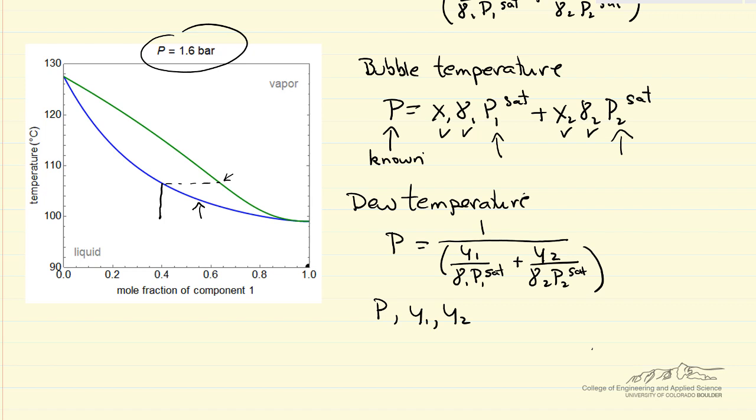We don't know the saturation pressures because we don't know the temperature. Now we're going to have to solve equations simultaneously: Antoine's equations for the two pressures, this equation, and then the equation that relates gammas to mole fractions. So the dew temperature calculation is a lot more complicated than the dew pressure calculation. But we're using the same modified Raoult's law to calculate the values and using Antoine's equations.